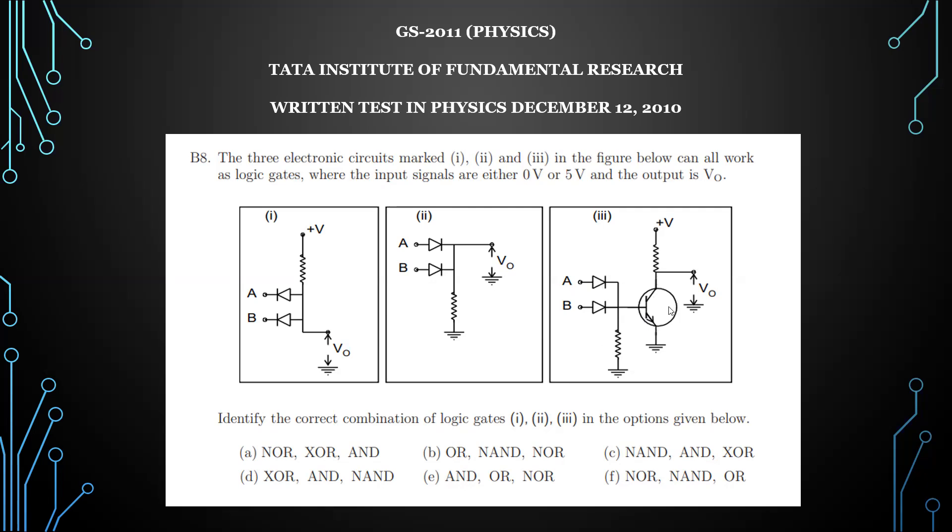When the diodes are not conducting, the OR gate gives zero when both inputs are zero. Then the transistor goes into cutoff region and this voltage will appear with no current flow. This is an AND, OR, and NOR gate.